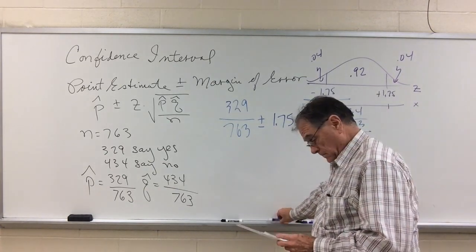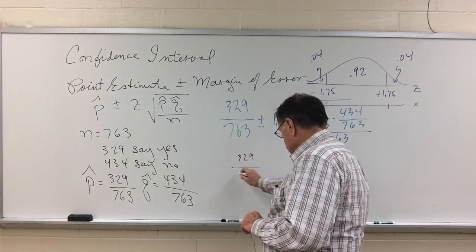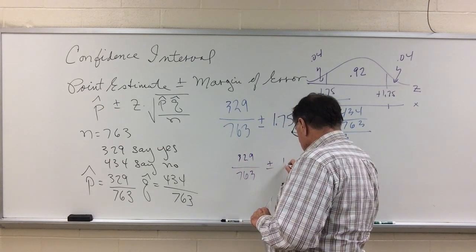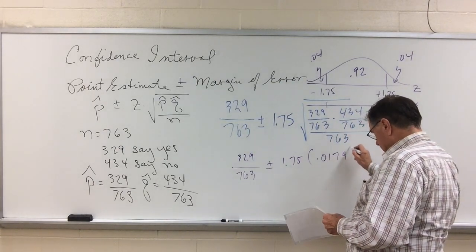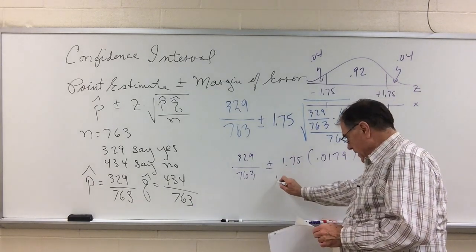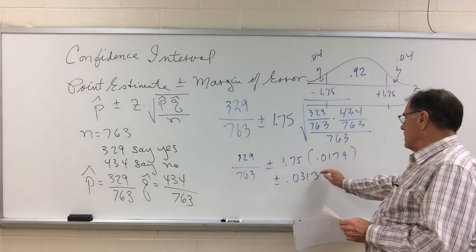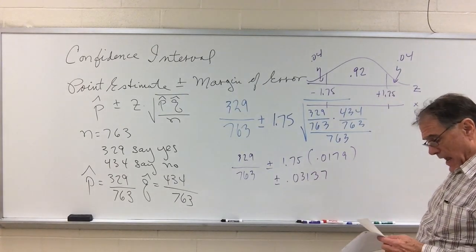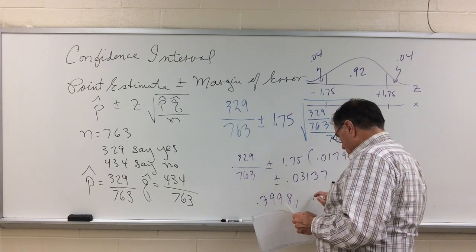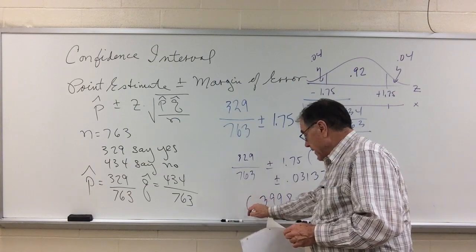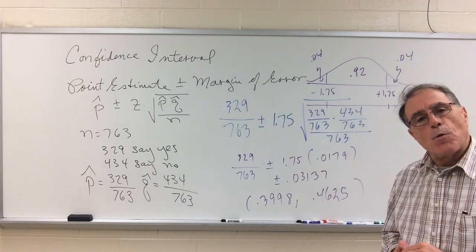So now it's a matter to put those numbers into our calculator and crunch those numbers. So when I do, I come up with 329 out of 763 plus or minus 1.75 times 0.0179, which gives me a plus or minus of 0.0313, and we could keep going depending on how many places you want to carry this, giving me a confidence interval of 0.3998 to 0.4625. And there's my 92% confidence interval for the proportion.